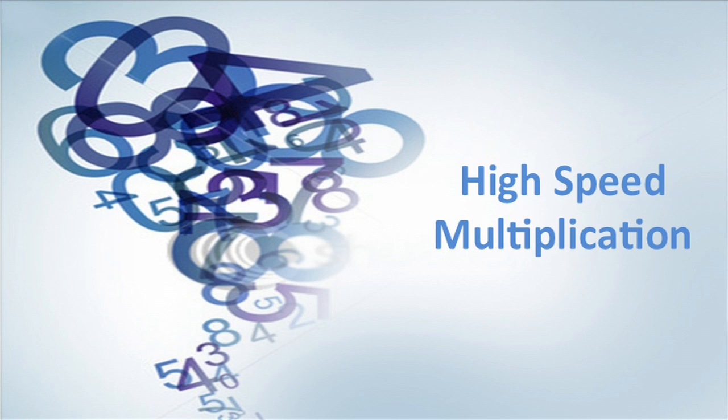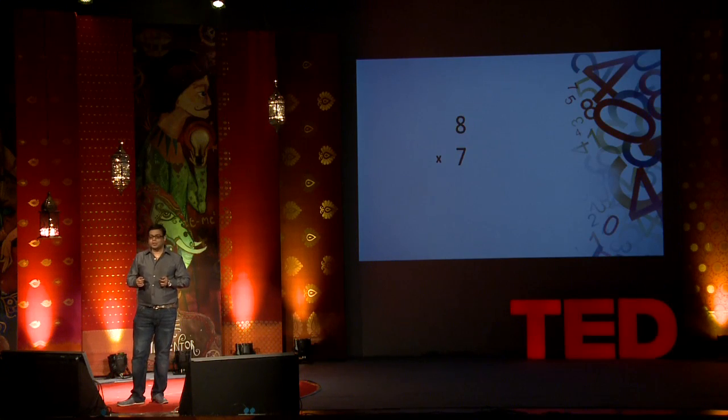High-speed multiplication. We all know the answer to this. 8 times 7 is no rocket science. But doing this in Africa would create a lot of problems. Children would actually draw 8 circles. Again 8 circles. Again 8 circles. And then count the 56 circles 7 times. And give you the wrong answer of 54. That's how bad the situation is actually.